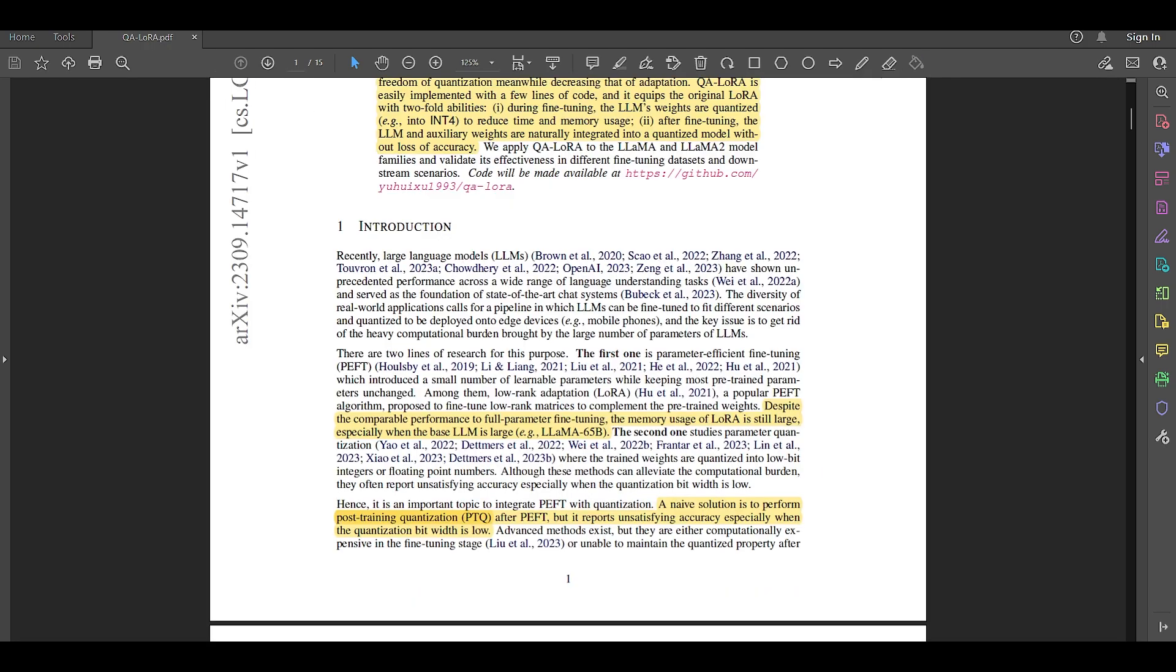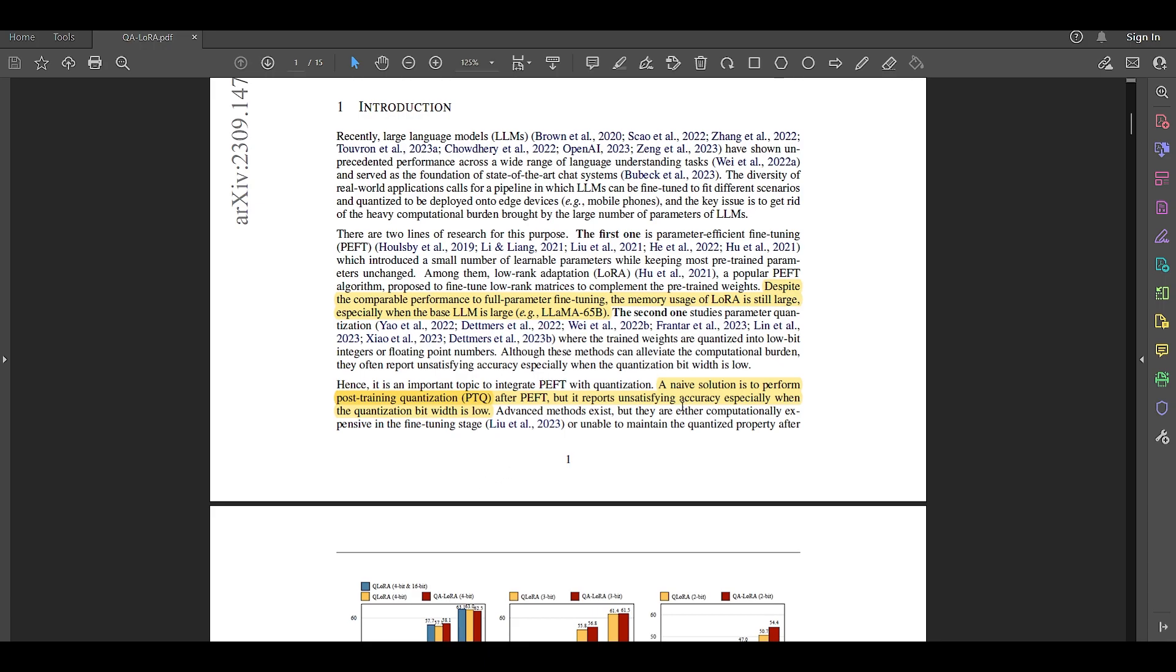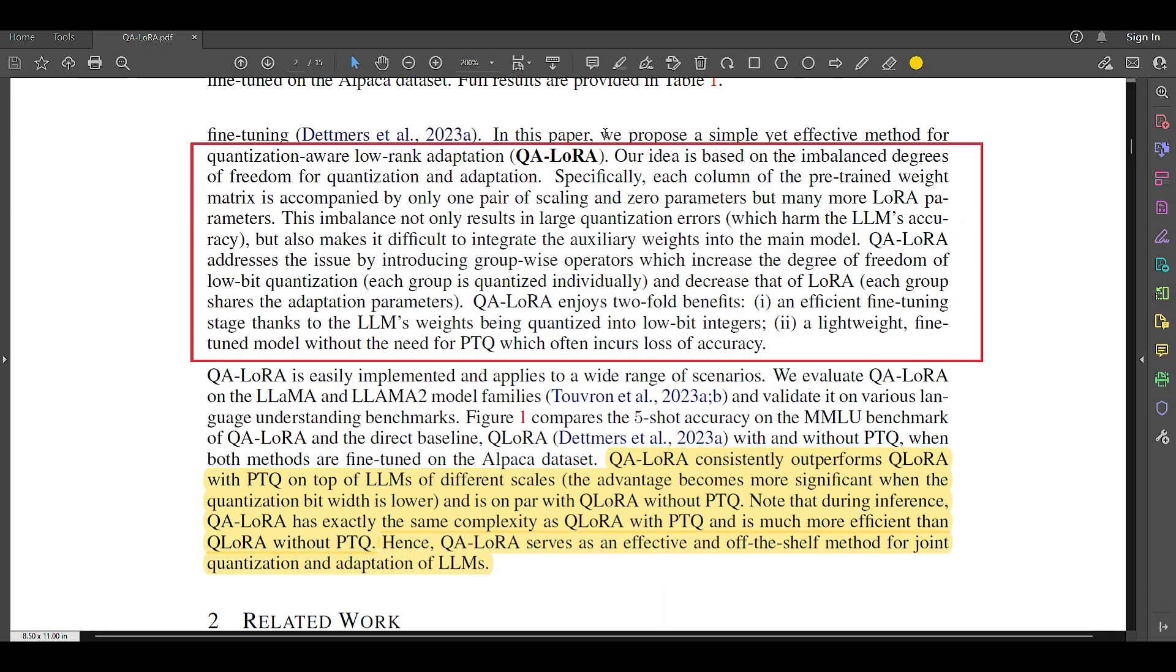Now, coming back to the paper again, as we discussed, the original problem is of a high memory usage even while we are implementing LoRA and quantization. So, this paper says, a naive solution for this problem is to perform post-training quantization (PTQ), that is, after PEFT, but it reports unsatisfying accuracy, especially when the quantization bit width is low. And hence, in this paper, we propose a simple yet effective method for quantization-aware low-rank adaptation, QA-LoRA, that is. Our idea is based on the imbalanced degrees of freedom for quantization and adaptation.